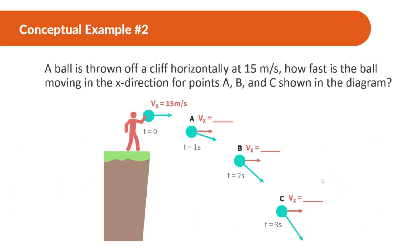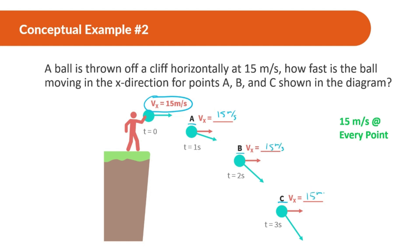Practice problem: a ball is thrown off a cliff horizontally at 15 meters per second. How fast is the ball moving in the X direction for points A, B, and C shown in the diagram? The answer is that it's going to be 15 meters per second at every point, because in the X direction it's not getting faster or slower at all.